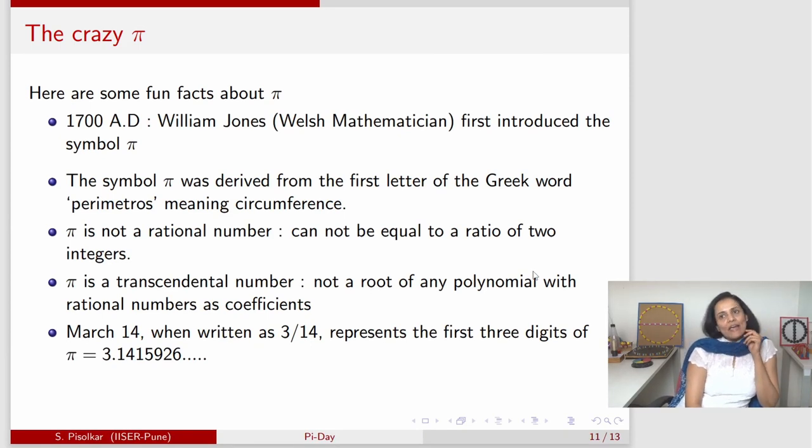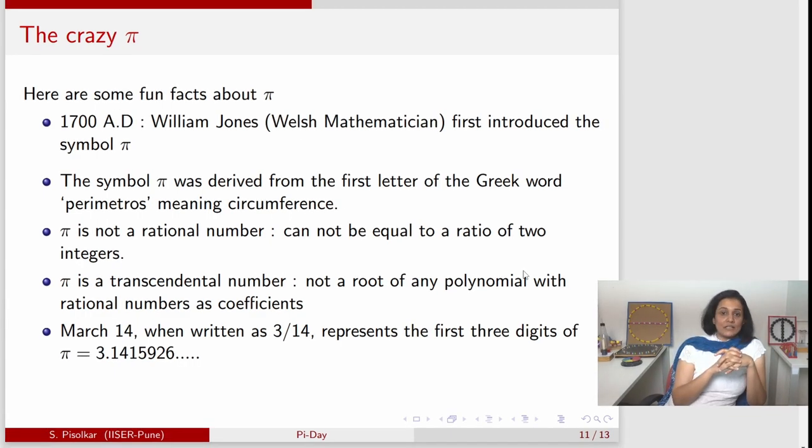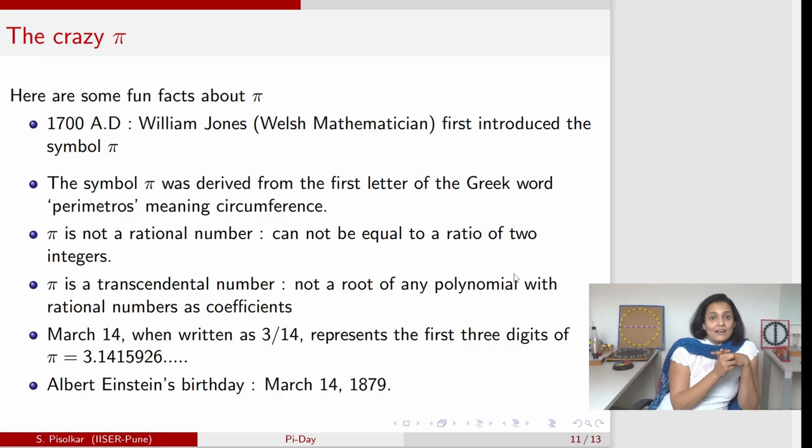Why do we celebrate pi day on March 14th? If you look closely at the digits of pi, which is 3.14 something something, 3.14 can be associated with the way of writing the date. If you write March 14th as 3/14, it represents the first three digits of pi. It's also Albert Einstein's birthday.